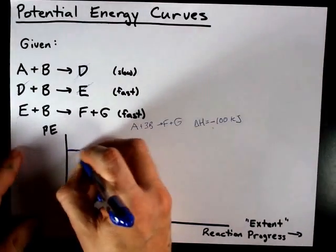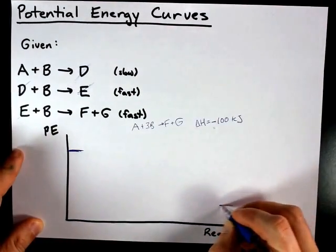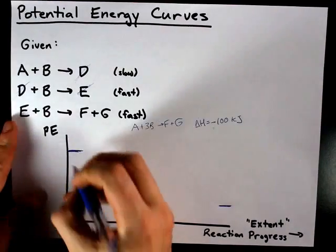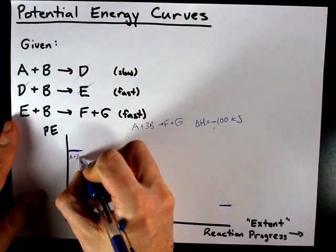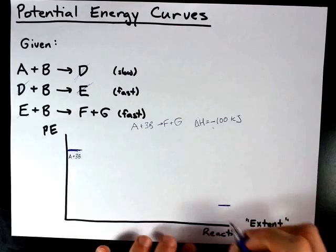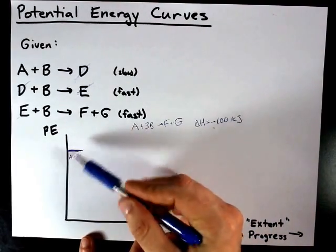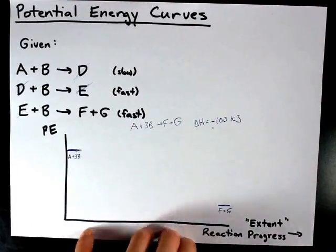which means it is giving off energy overall. My reactants, my A plus three B's, compared to my F plus G's, are higher. Reactants higher than products for an exothermic reaction.